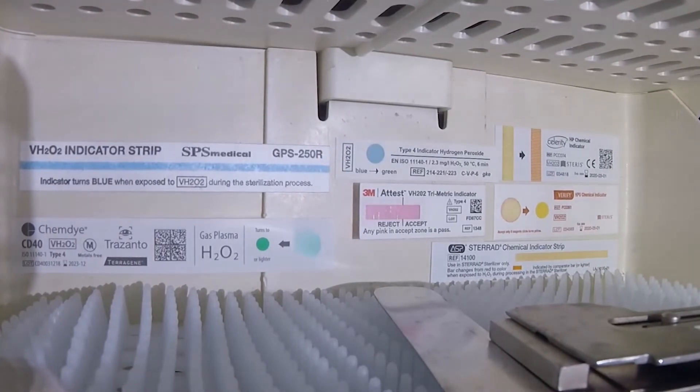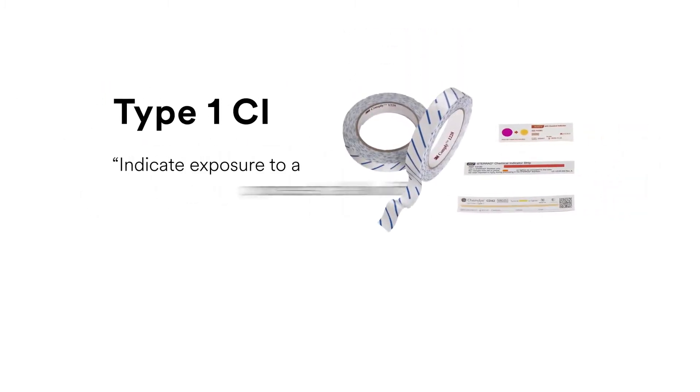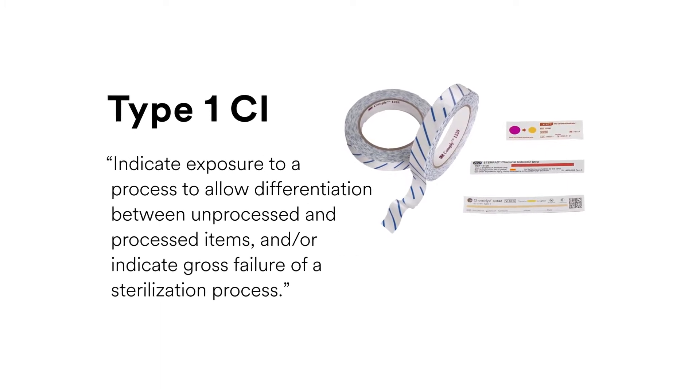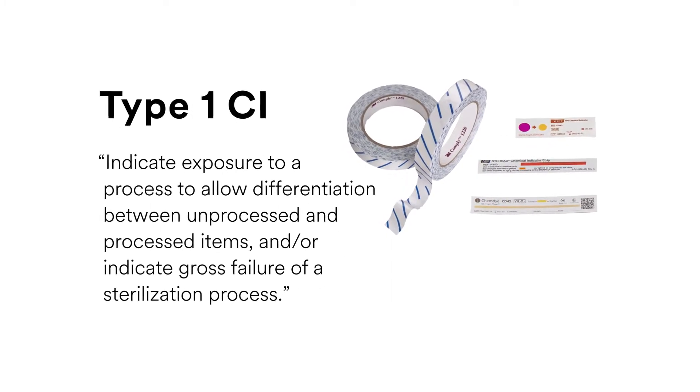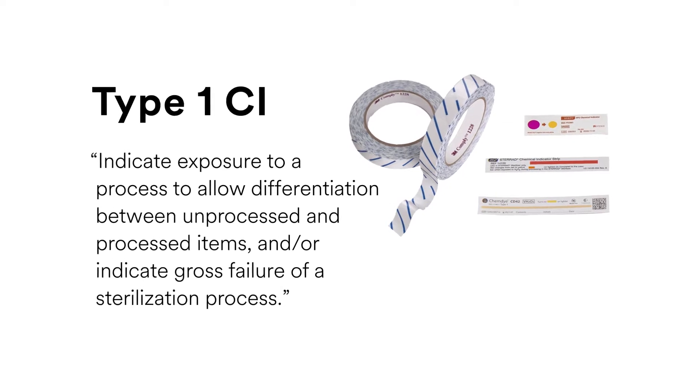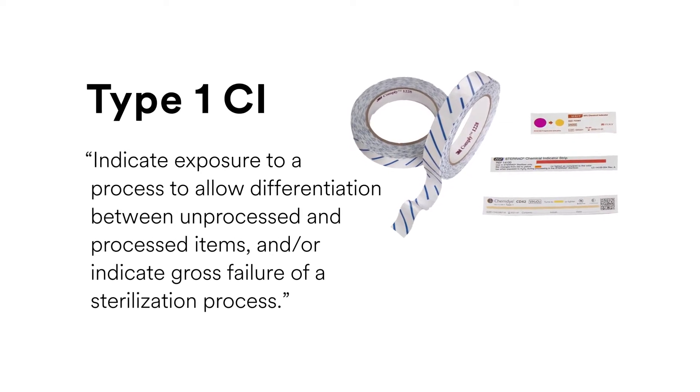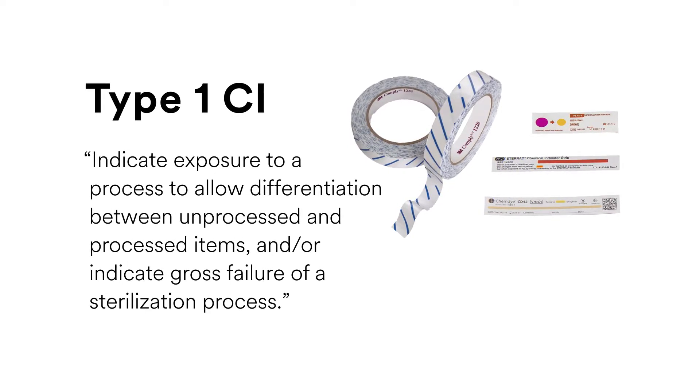Video from an actual vaporized hydrogen peroxide sterilization cycle is used to demonstrate chemical indicator color change inside a pack. Portions of the video are time-lapsed. According to ISO 11140-1, the intended use of a Type 1 CI is to indicate exposure to a process to allow differentiation between unprocessed and processed items and or indicate gross failure of a sterilization process.